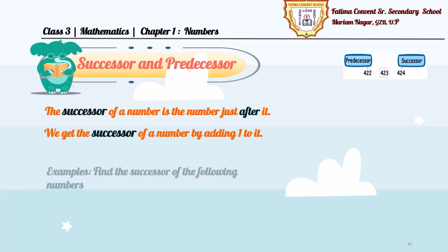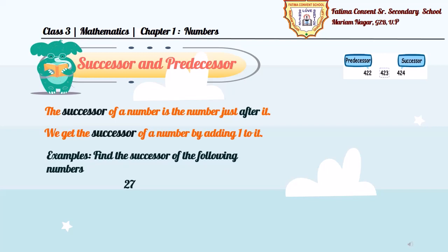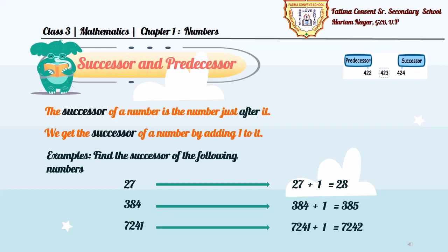So, let's see some examples, how to find the successor of the following numbers. First, we have 27. To get successor of 27, we need to add 1 to it, that is equal to 28. So, successor of 27 is 28. Same way, in 384, the successor will be 385. And next, we have 7241. So, by adding 1 to this number, we get 7242. This is the successor of 7241.